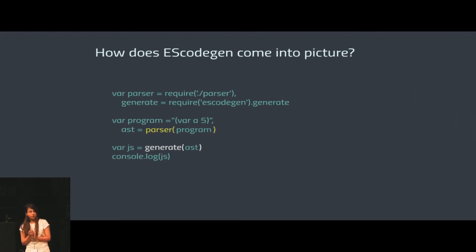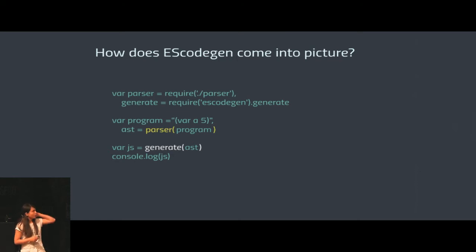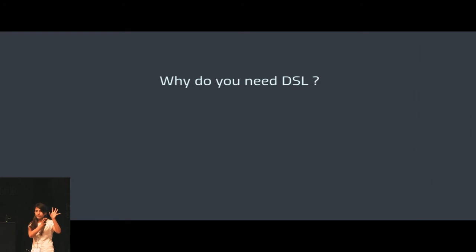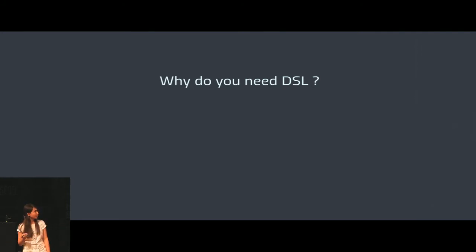Now let's look at the generator. We use a node module called escodegen to generate JavaScript out of the ES tree. We require the generate function of the escodegen package, pass the program to the parser to get the AST, and then the AST is passed to the generate function, which gives us JavaScript. That is the workflow: compile the domain specific language, parse it, get the tree, pass it to a generator, and get the target language.